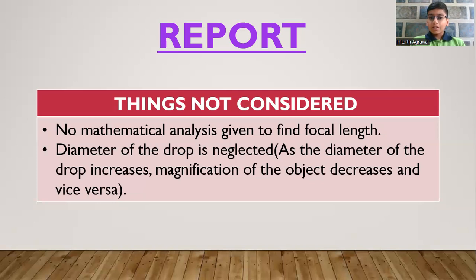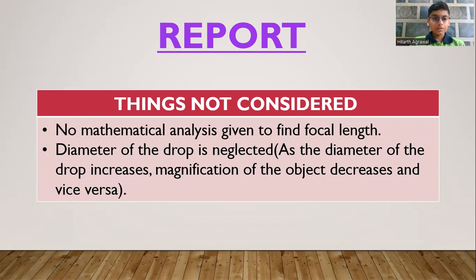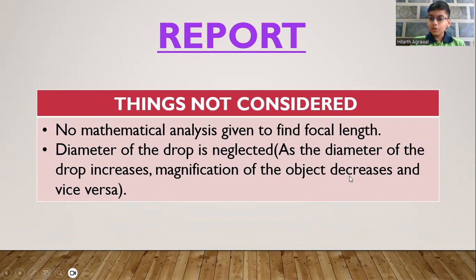The things which were not considered were that no mathematical analysis was given to find focal length — this must have been included to understand the formula and related concepts. Additionally, the diameter of the drop was neglected. According to the theory, as the diameter of the drop increases, magnification decreases, and vice versa.